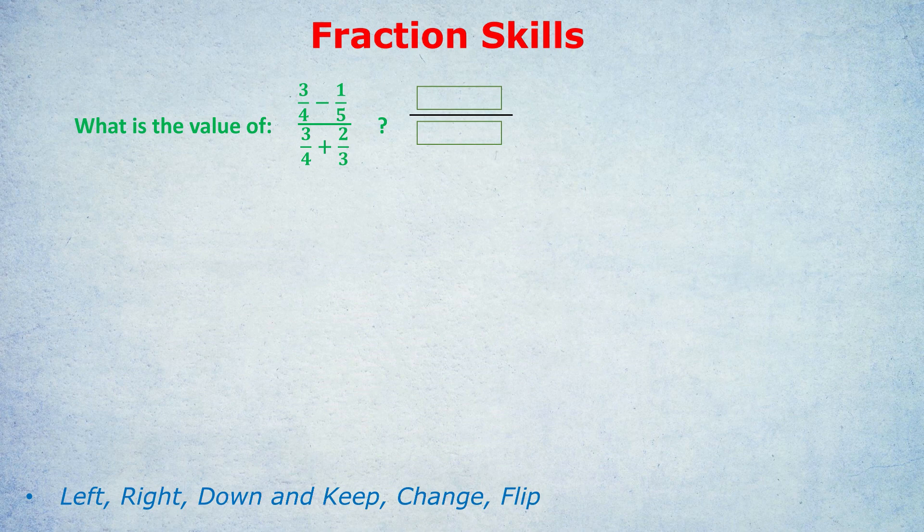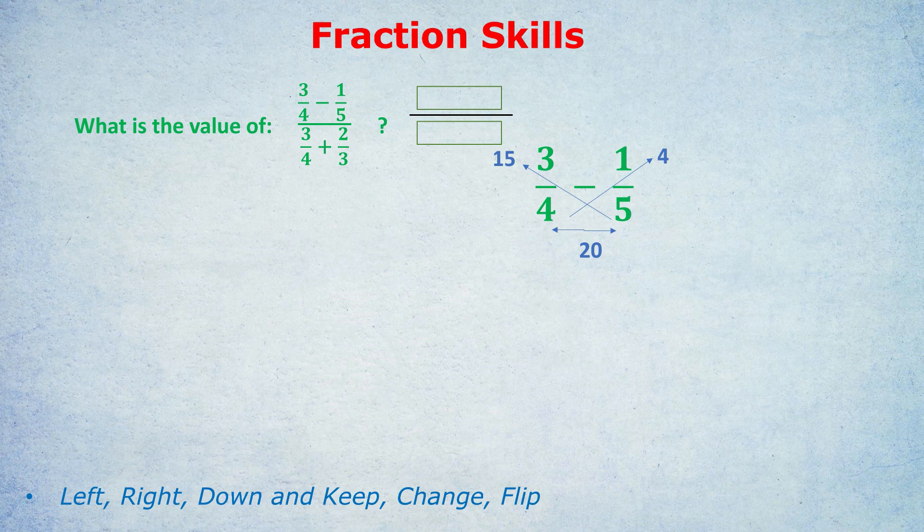But let's try those techniques that you loved in the previous slide right here. We're going to do 3 fourths, take away 1 fifth in the numerator. Let's draw the arrows. Going up to the top left, 5 times 3 is 15. By the way, notice the position is quite important. I don't write the 15 on the right. It's got to be written on the left, because the order matters here, for subtraction. 4 times 1 is 4. 4 times 5 is 20. What do we do with the 15 and the 4 at the top? We subtract them, because there was a subtract sign between the fractions. 15 take away 4 is, of course, 11, and the denominator stays as 20.